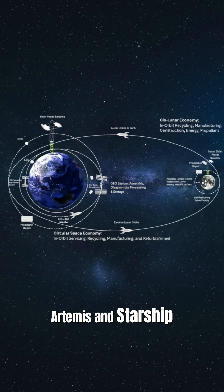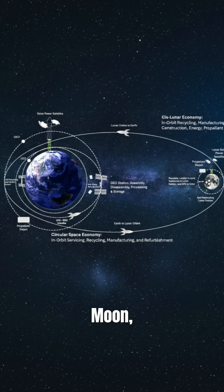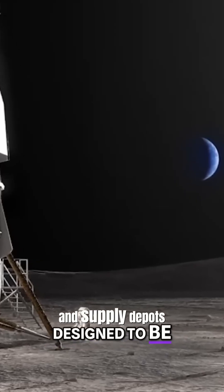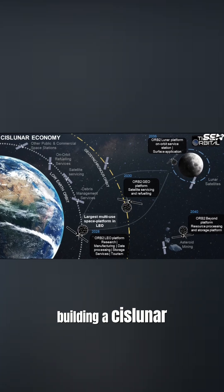Artemis and Starship connect Earth and Moon, with reusable landers and supply depots building a cislunar economy.